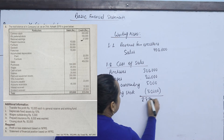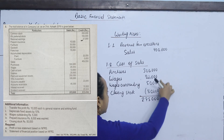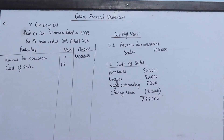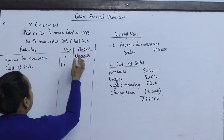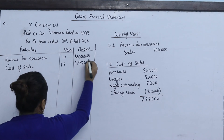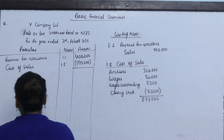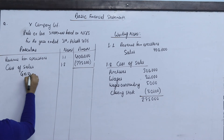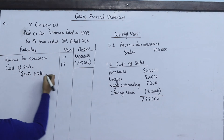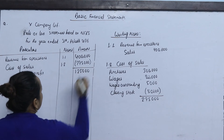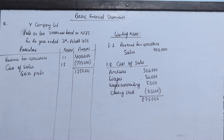After deducting closing stock, the cost of sales comes to 2,75,000. This gives us a gross profit of 1,25,000.